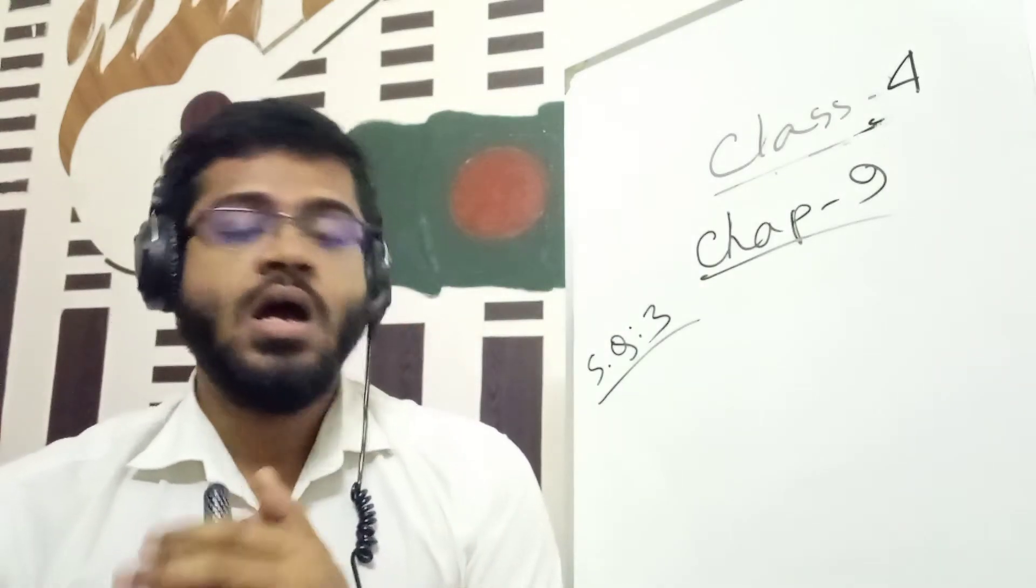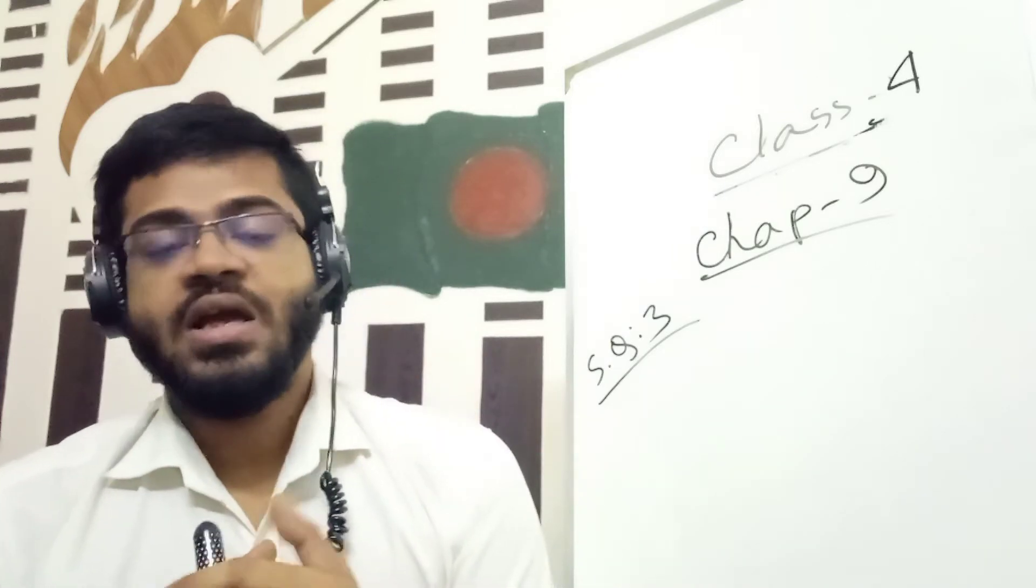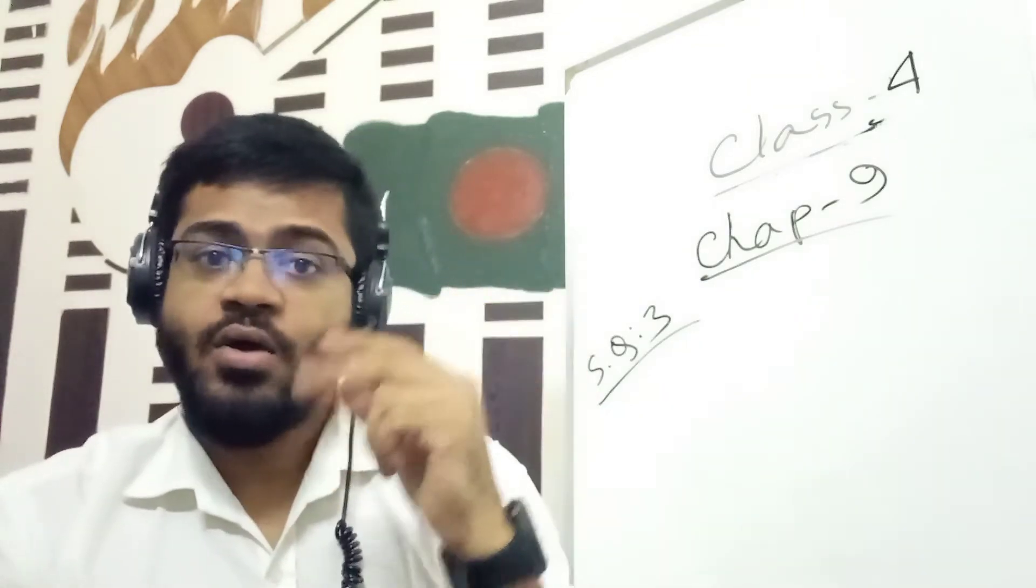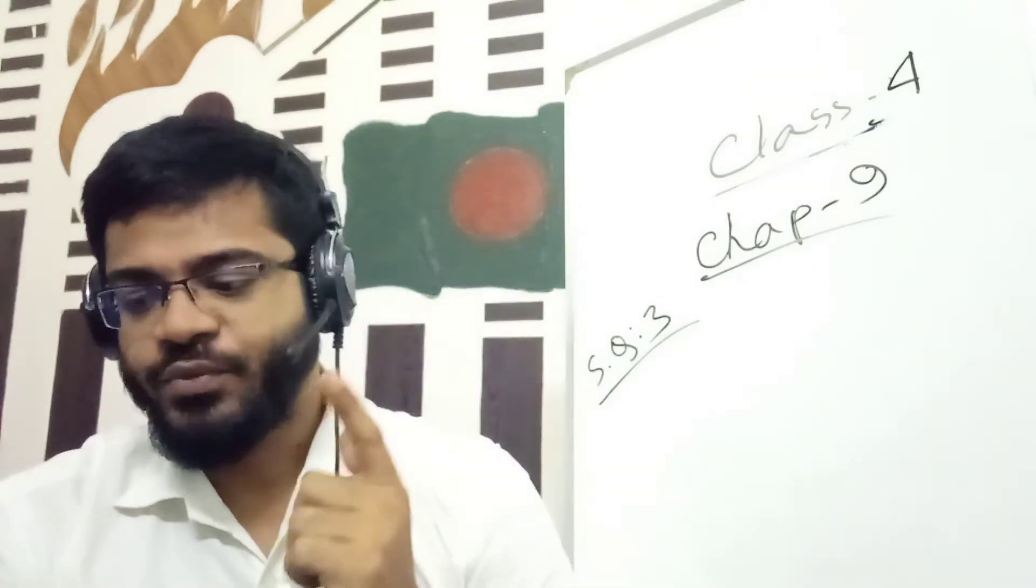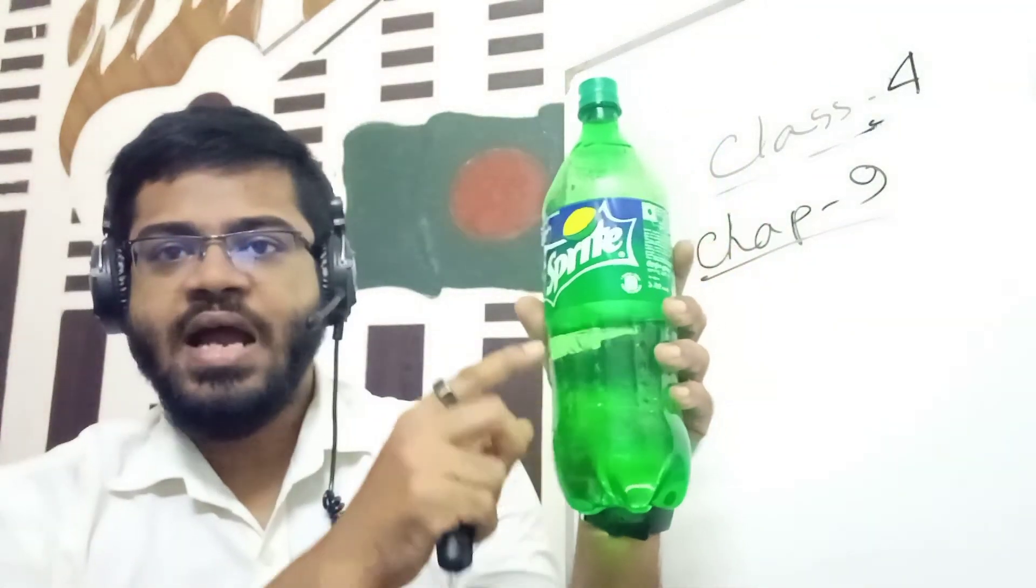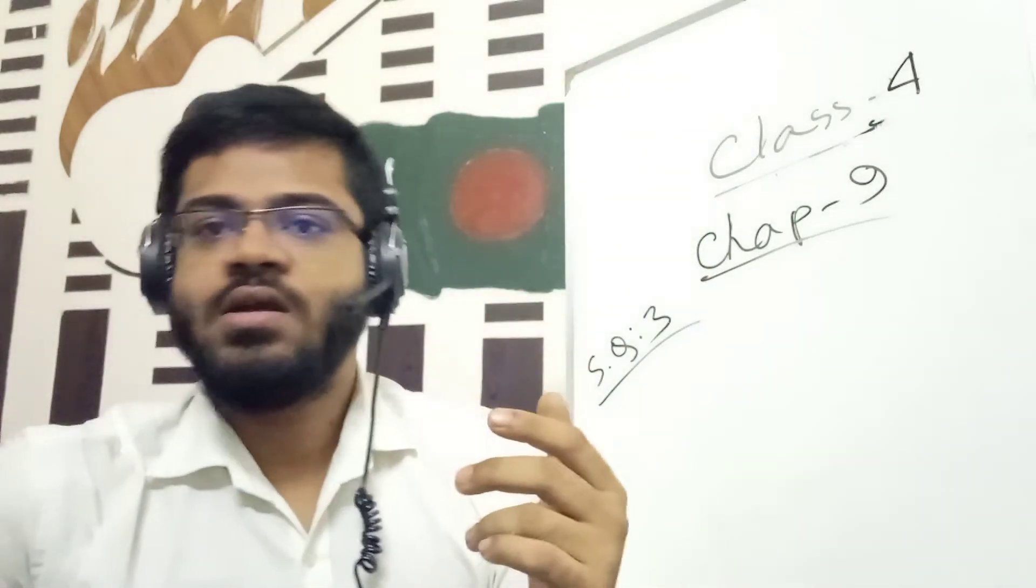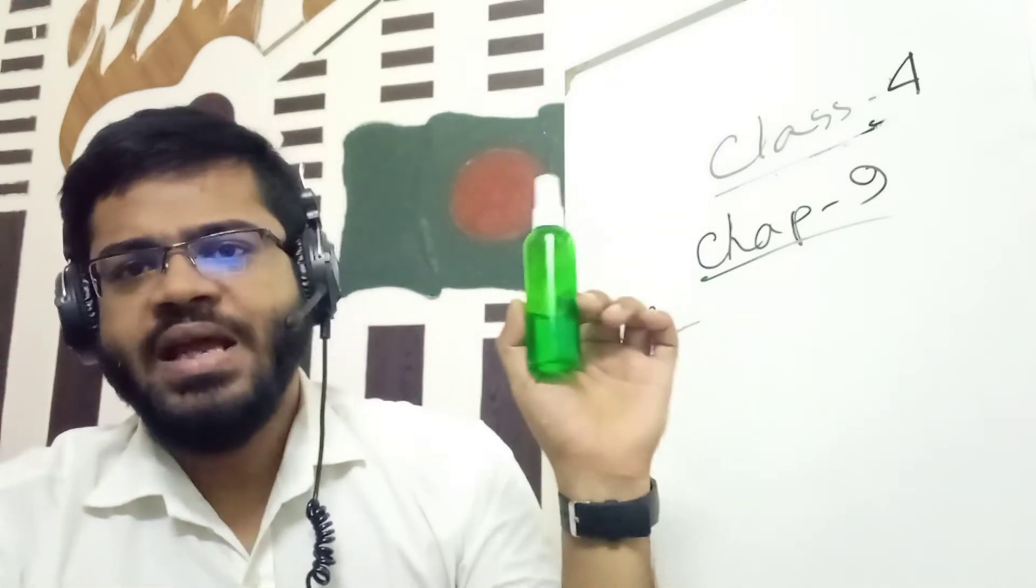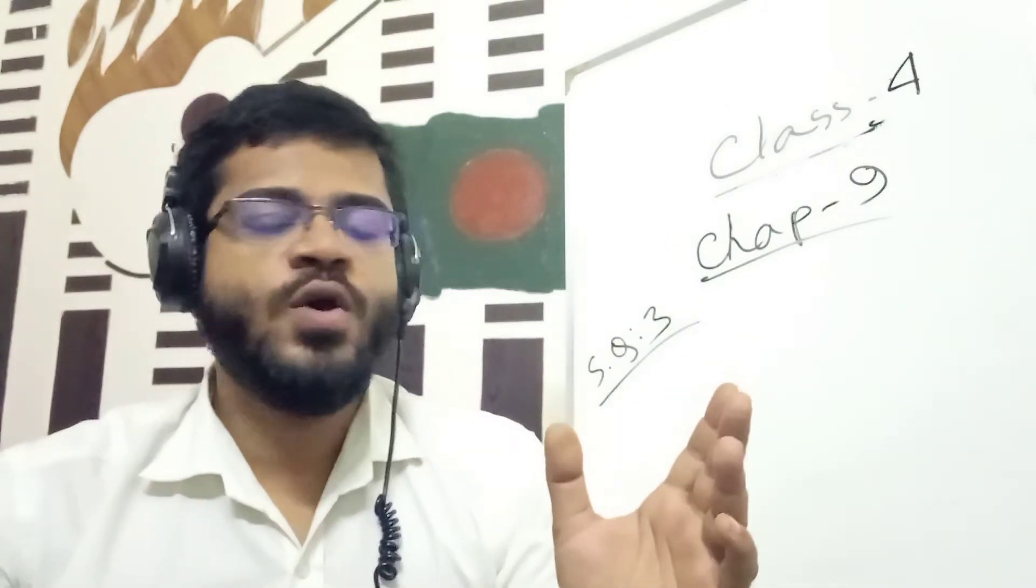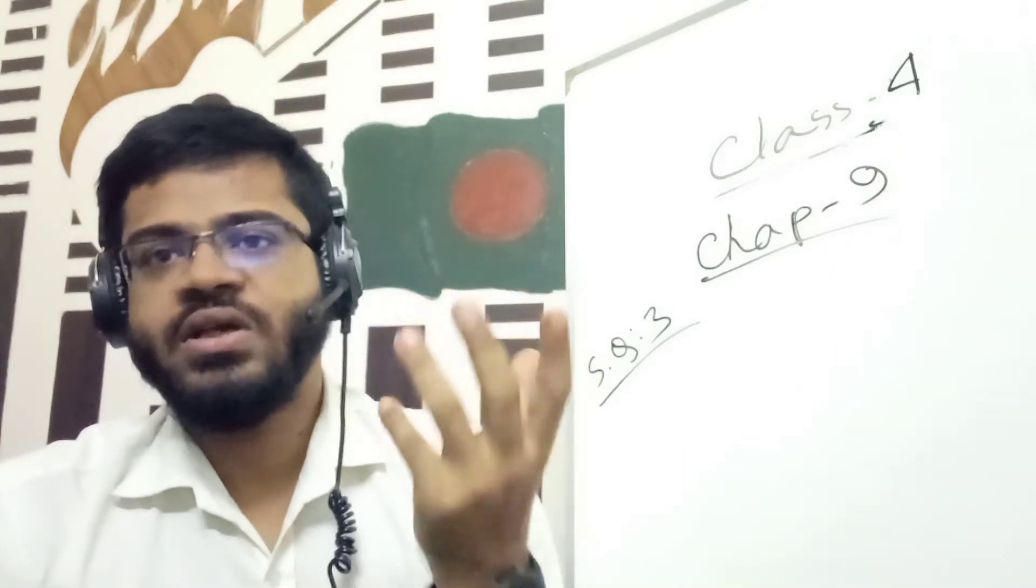But liquids don't have any fixed shape. If you keep this bottle in different positions, the liquid takes the shape of the container. So it does not have a specific shape. This is a container shape.